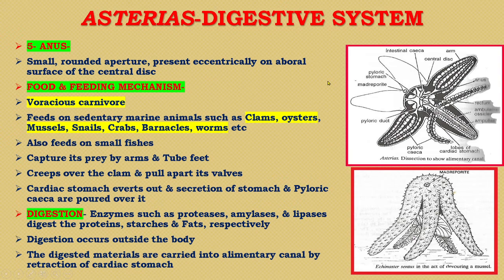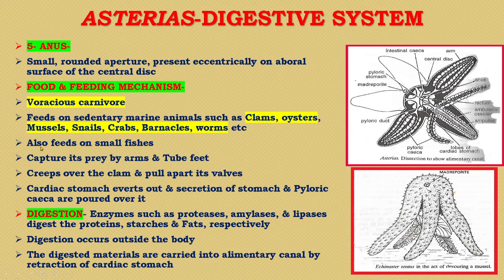Now, food and feeding mechanism. Asterias is a voracious and carnivorous animal that feeds on sedentary marine animals such as clams, oysters, mussels, snails, crabs, barnacles, worms, and small fishes. It captures prey by its arms and tube feet. It creeps over the clam, which is considered its favorite food, and pulls apart its valves with the help of its arms and muscles. The cardiac stomach everts out and secretions of the stomach and pyloric caeca are poured over it.